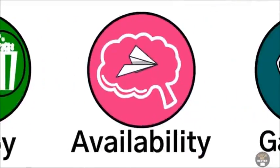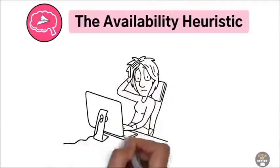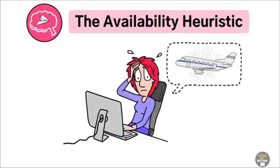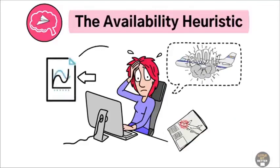The availability heuristic. The availability heuristic is when you judge the likelihood of events based on how easily you can remember them. You might believe plane crashes are common simply because it has been on the news a lot recently. To avoid this, look for actual facts and statistics before making a decision.